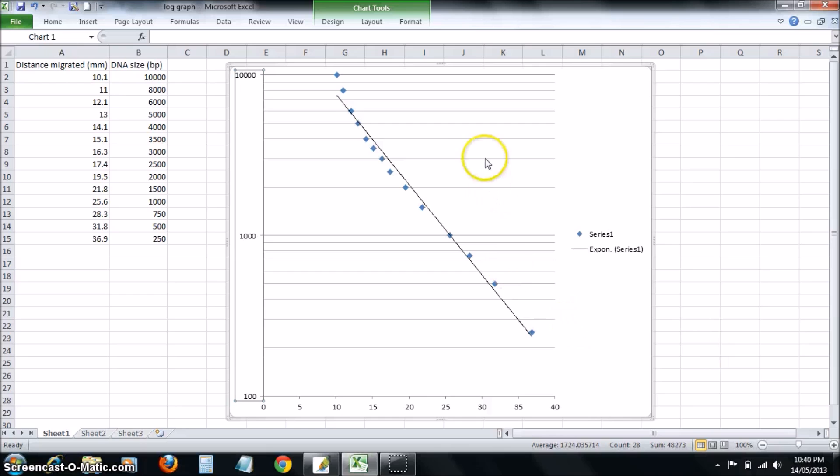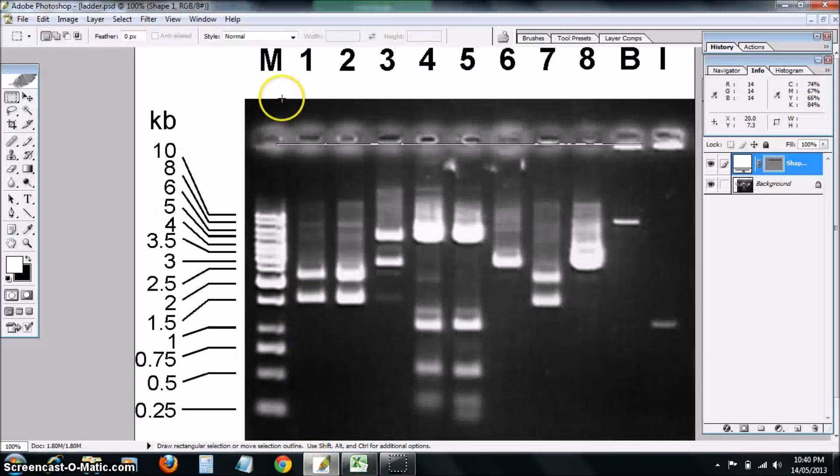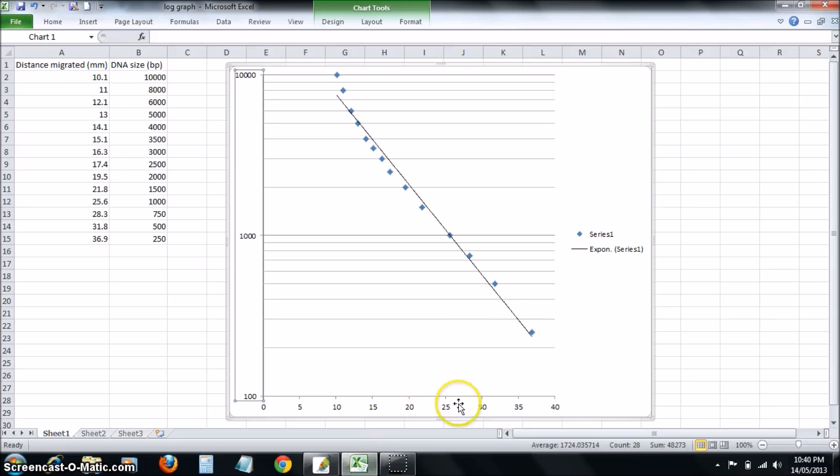You can now use this as a standard to measure some of these unknowns. Your unknowns will be out here. You won't know the DNA, the base pairs, the size of your DNA. So you will use this standard curve.